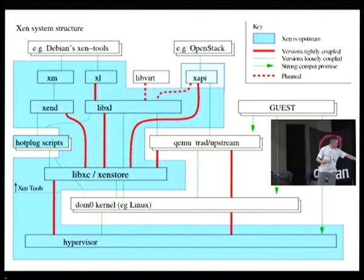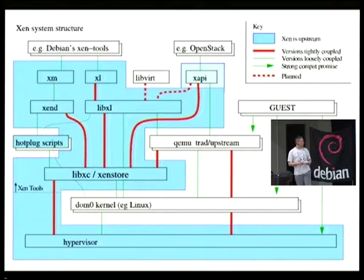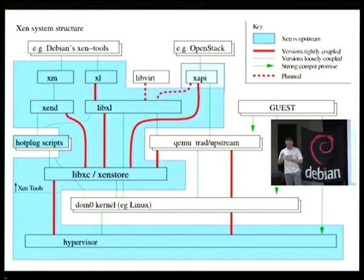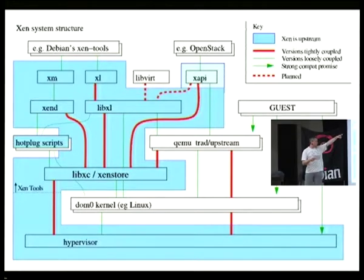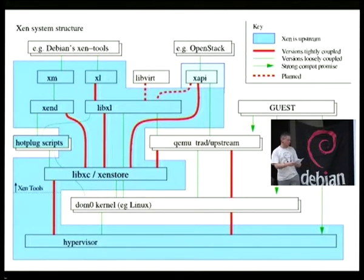Upstream, we call this part the Xen tools. Unfortunately, this is a bit confusing because there's also the Debian Xen tools package. I'm going to keep using the upstream terminology here. The Debian Xen tools package is a little thing up here, which is a sort of provisioning utility which uses all the Xen tool stack code. Together with higher layers like the Xen tools package, OpenStack, and Xapi maybe, we call everything above the hypervisor and the Dom0 kernel the tool stack.